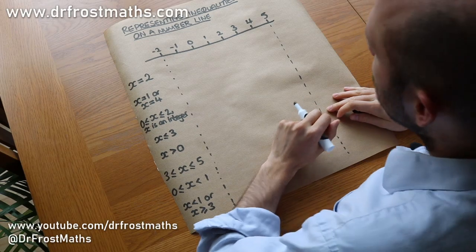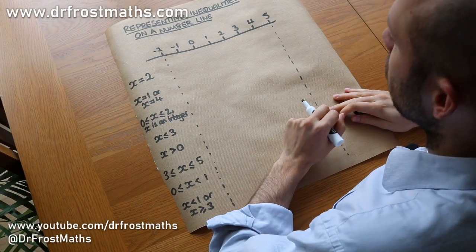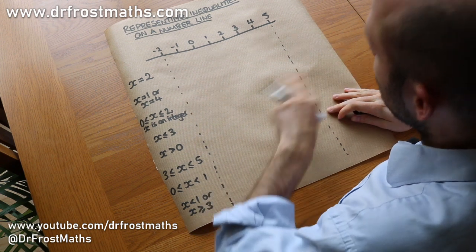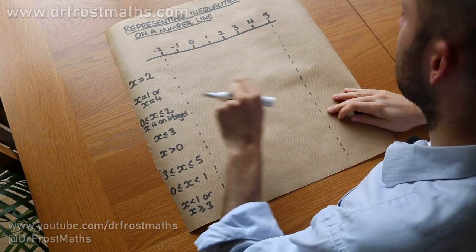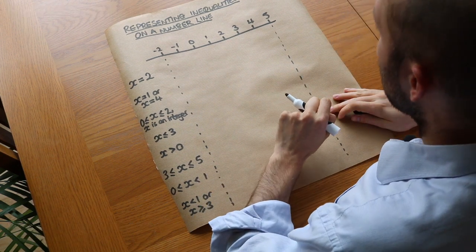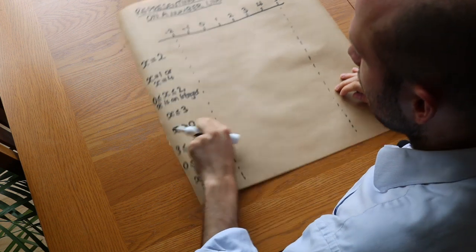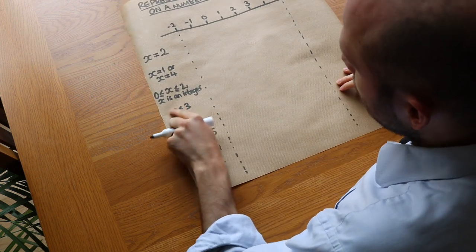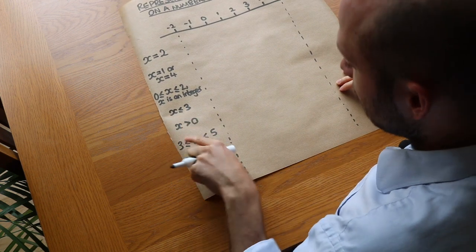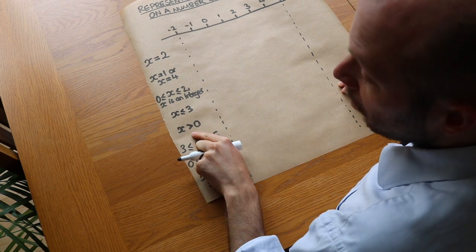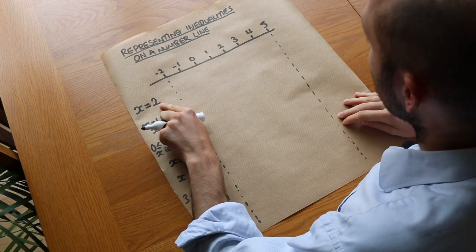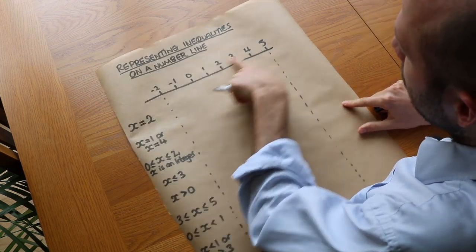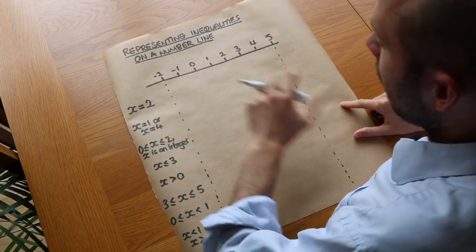Hello and welcome to this video on representing inequalities on a number line. Often you've solved some kind of linear or quadratic inequality and you've got some kind of solution — you might have x is less than or equal to 3, you might have x is greater than 0, or you might just have a single solution x equals 2. We want to know how to represent that on a number line.